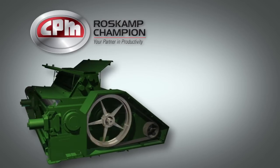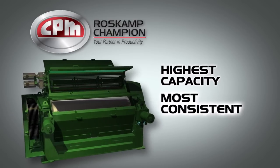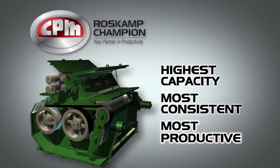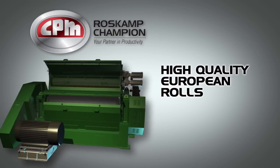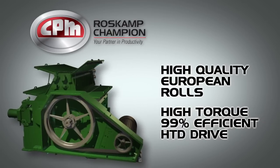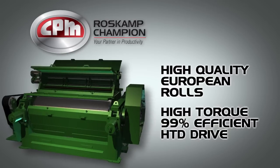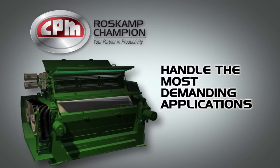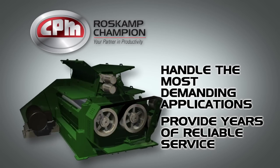CPM Roskamp Champion manufactures the highest capacity, most consistent and most productive flaking mills available. Featuring high-quality rolls from European suppliers and built with a high-torque, 99% energy-efficient HTD main drive, Roskamp flaking mills handle the most demanding applications and provide years of reliable service.